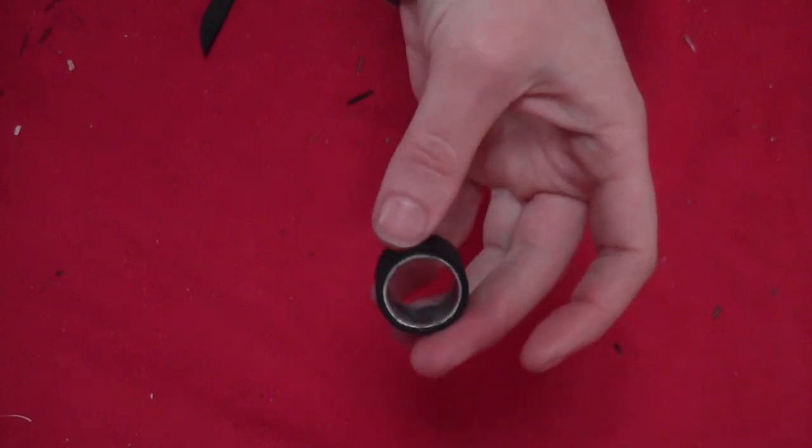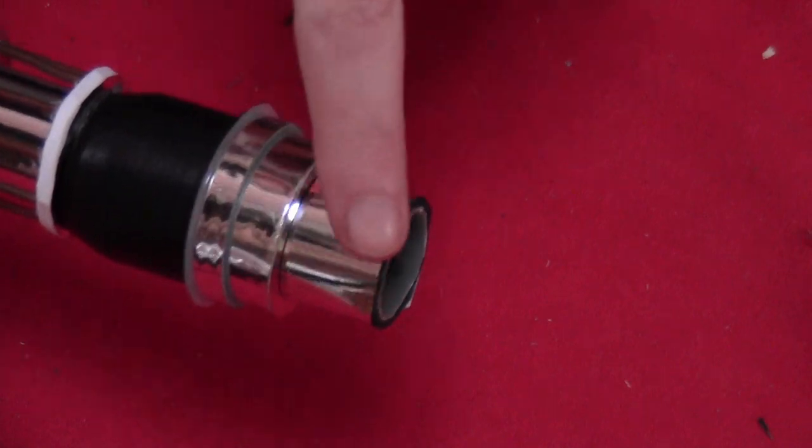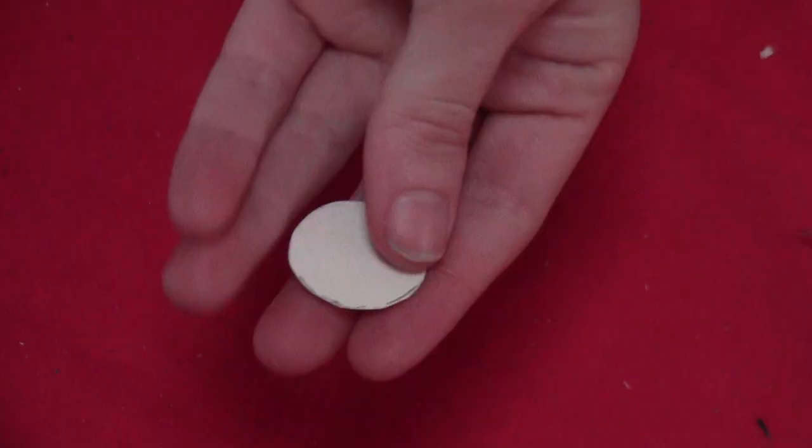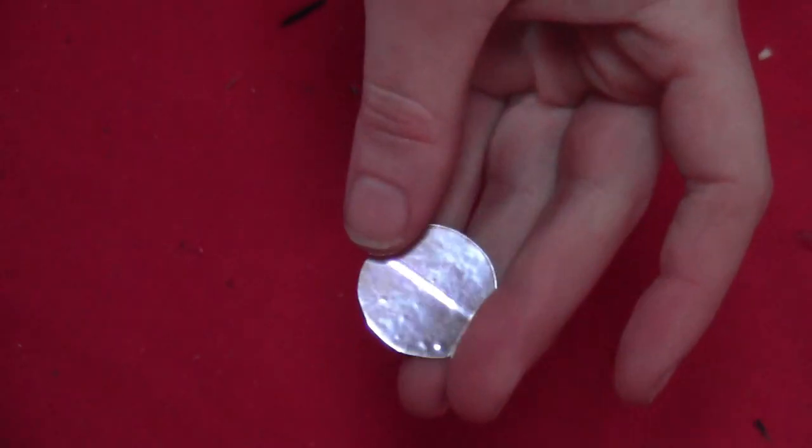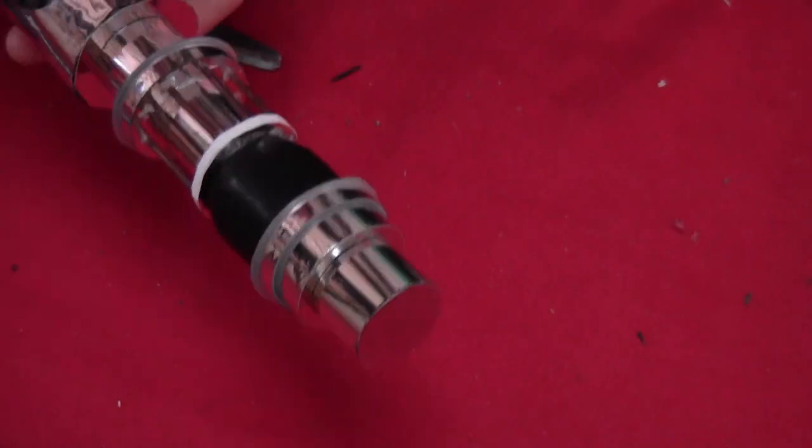And then another piece of that spool - covered that in craft foam and glued that onto the end, and covered it in silver. And then covered a cardstock circle in silver and glued that right onto the end.